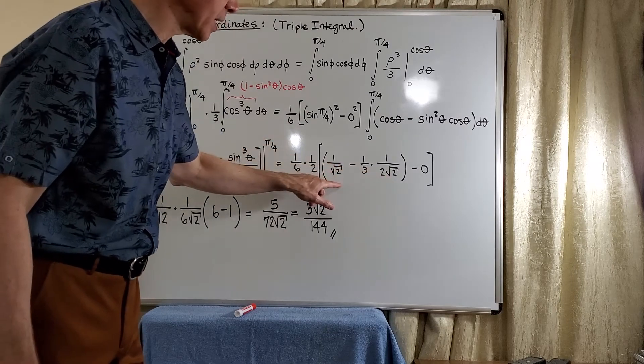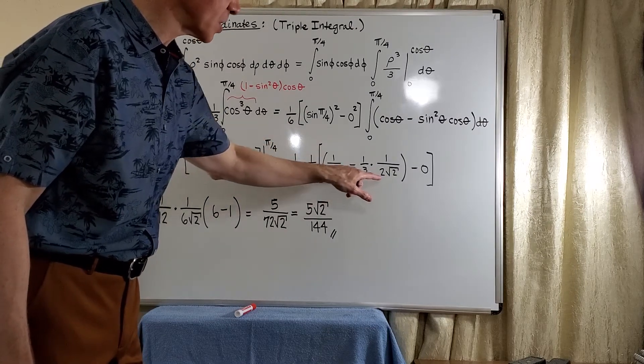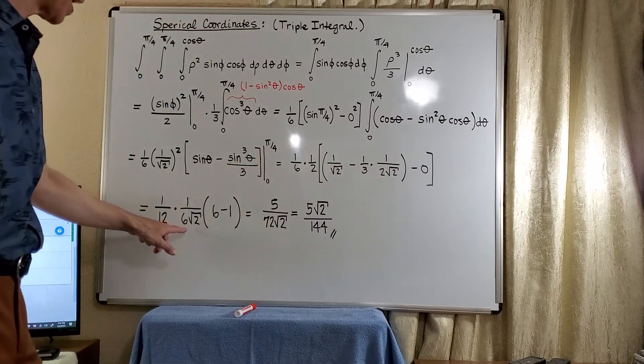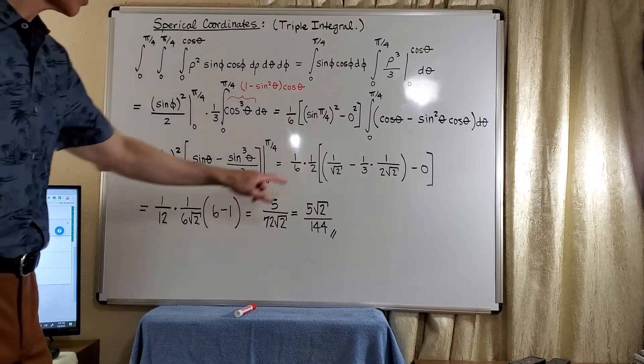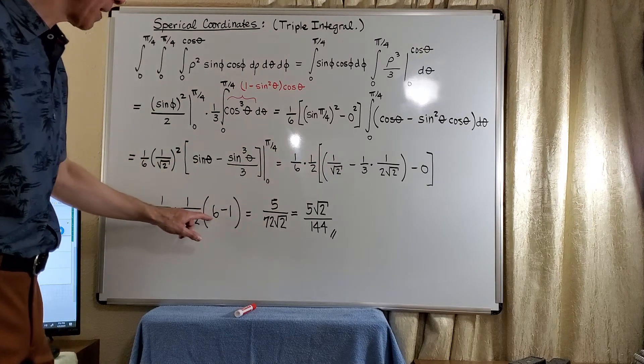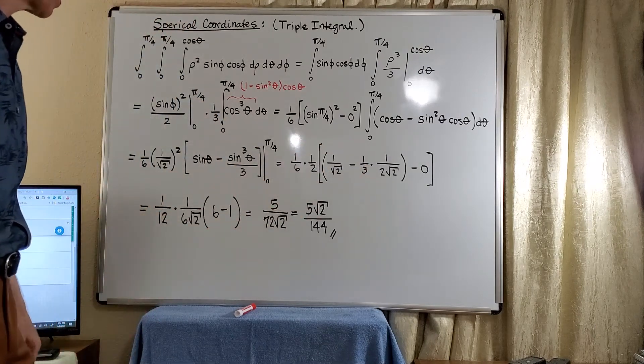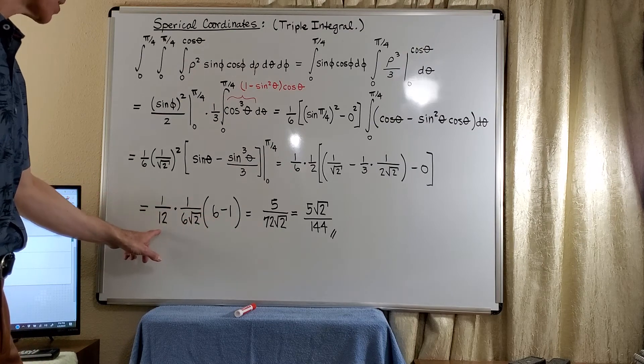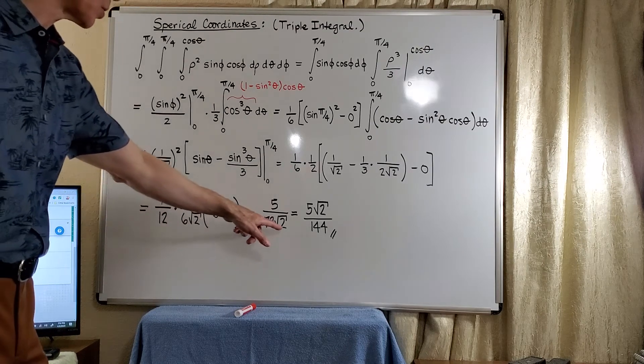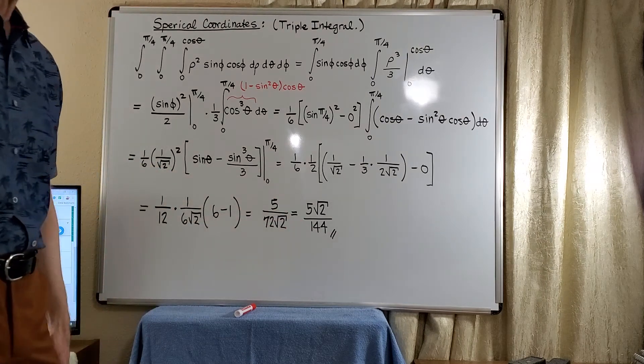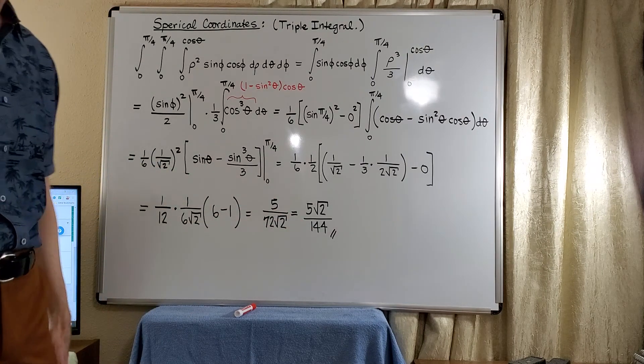And now for this portion here, to simplify it, we can just go ahead and factor the 6 root 2 downstairs. So we have 6 root 2 here. Notice here we had no 6, so we pay for it with the 6. And we just left behind the negative 1 here. And so that gives us 5, 6 times 12, 72 root 2 downstairs. And if you want to rationalize, you'll get 5 root 2 over 144. And we are done.